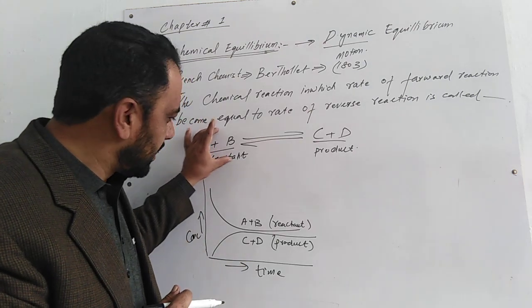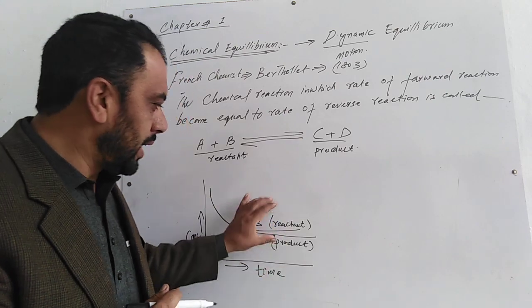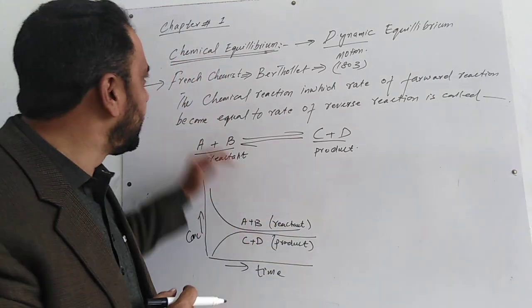Reactant concentration will decrease and product concentration will increase. But when equilibrium is established, chemical equilibrium occurs.